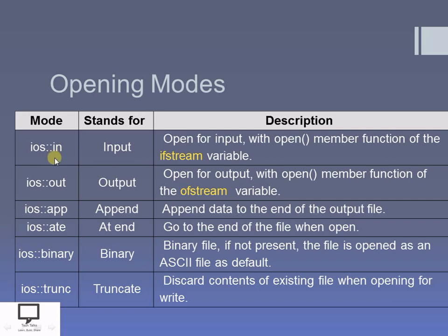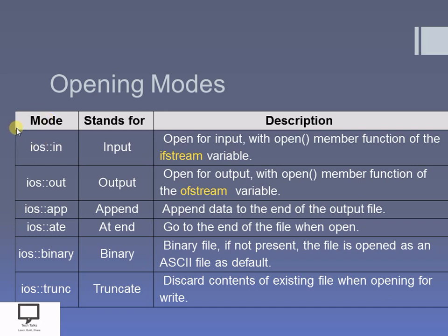The very first mode is the `in` mode. I use the `in` mode whenever I want to perform a read operation. `ios::in` is the syntax of the mode whenever I want to open a file. `in` stands for input mode, where input mode is used while reading a file. If I want to perform a reading operation on my file — reading is nothing but the input operation — that's why I will use the `ifstream` class. The object of the `ifstream` class is helpful to access this particular mode. The `open()` function is used for opening a file, in which the second parameter is where you need to provide the mode — that is where these opening modes are helpful.